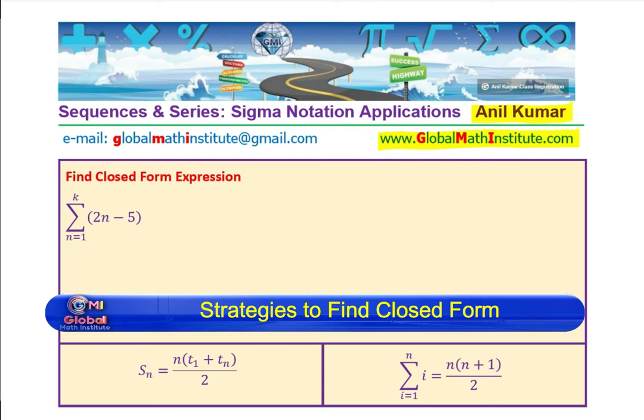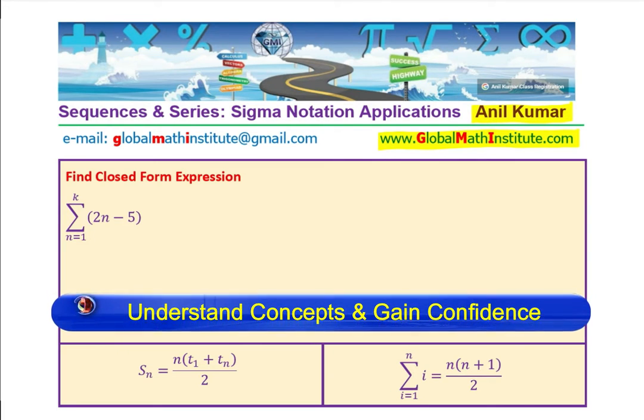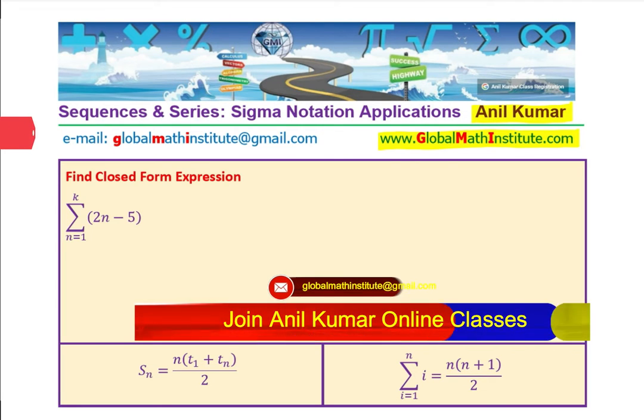I'd like you to pause the video, answer the question, and then look into my suggestions. Now the strategy here is to write this summation as sum of two summations and then simplify them to get the closed form expression.